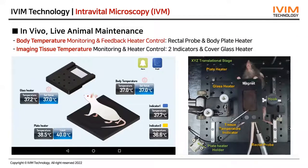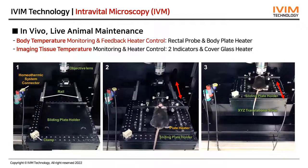We also provide various additional accessories for maintaining the healthy condition of a live mouse model during in vivo experiments. These include a rectal probe sensor for mouse body core temperature with a feedback heating plate system, and a glass heater for local tissue temperature maintenance of the imaging organ. If you need to move an organ slightly out of the body to image, this tissue temperature heater with an integrated cover slip maintains local tissue temperature. The translational stage is used for mounting the mouse model, with all accessories connected via a connector on the left.